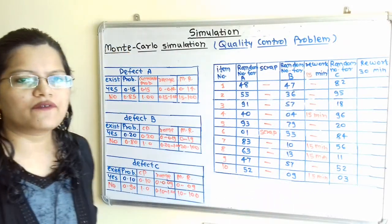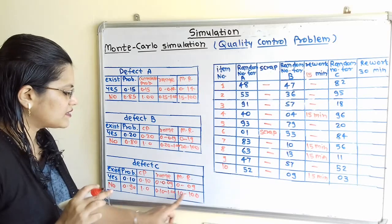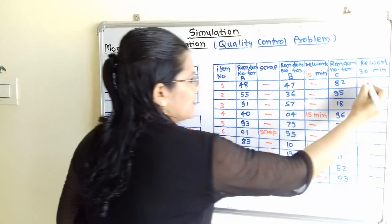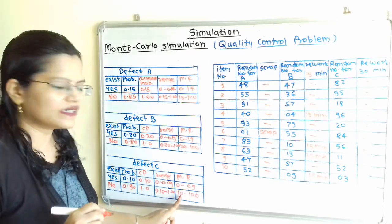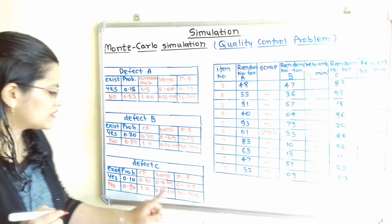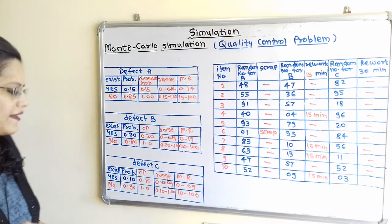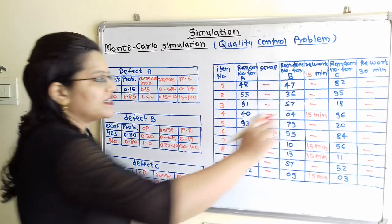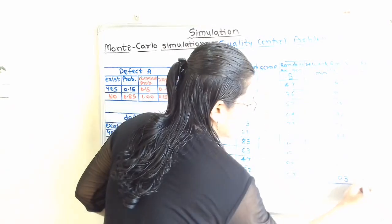Now we move to the random numbers for defect C. Random number 82 fits in the second row — no defect. 95, no defect. 95, no defect. 18, no defect. 96, no defect. 20, no defect. 84, no defect. 56, no defect. 11, no defect. 52, no defect. Then 3 fits in the range 0 to 9, so defect C occurs. When defect C occurs, there is rework for 30 minutes.